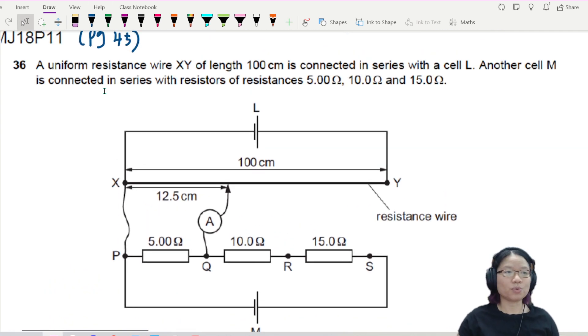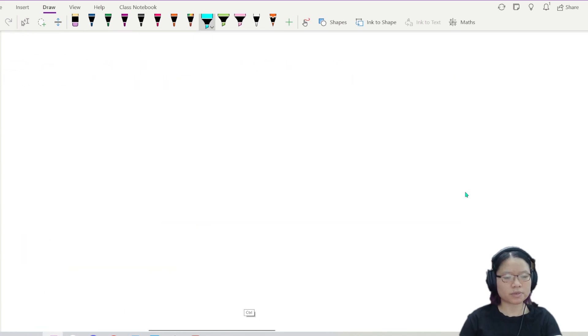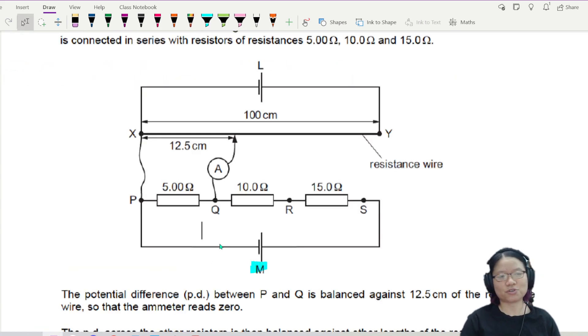Okay. So right now we have a uniform resistance wire XY of length 100 cm connected in series with a cell. This must be cell L. The other cell M. Number one down here. M. This is your M. Whoops. Okay, we're back. This is your M.